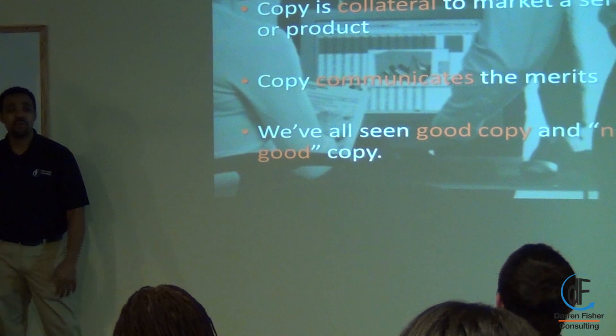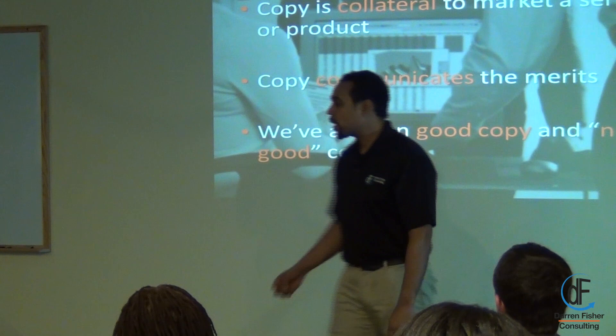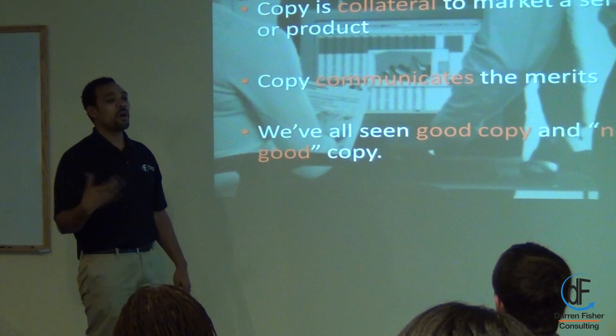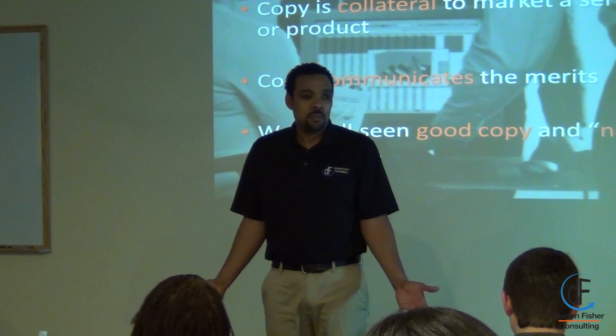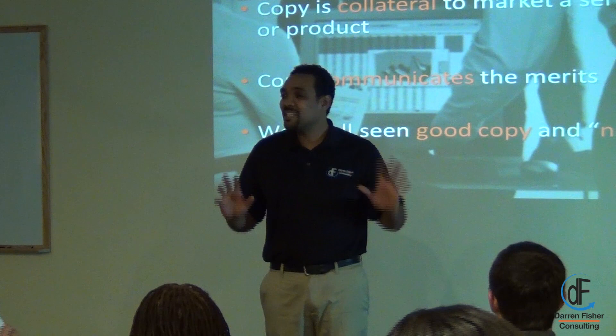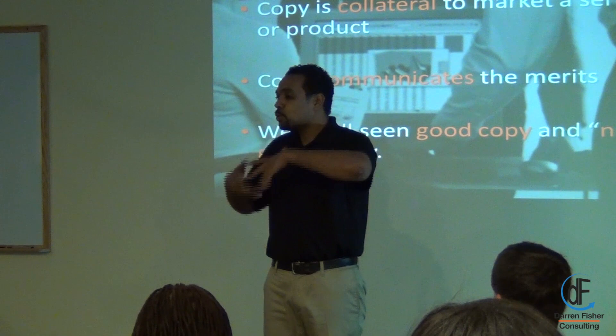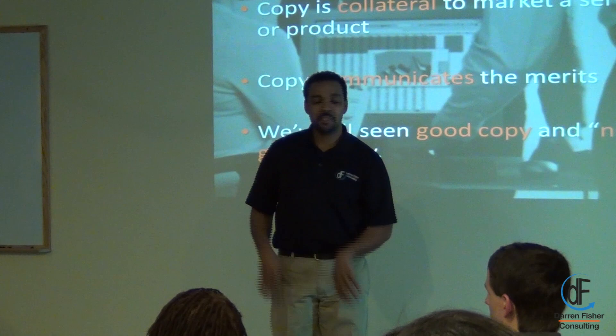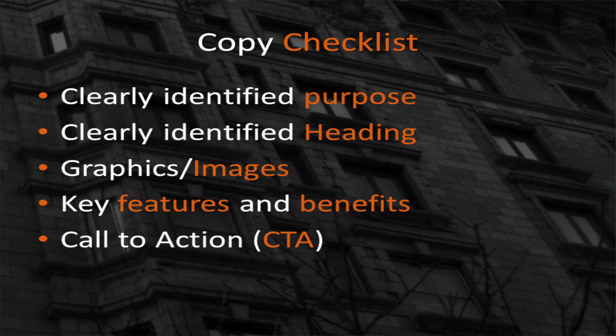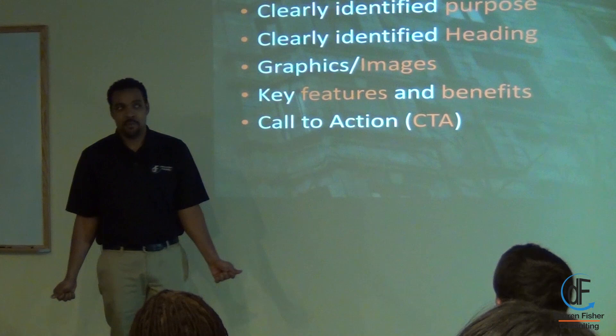Each one of us has seen good copy and not-so-good copy — stuff we generally like and don't like. We're going to look at evaluating it. We're going to go over what are the nine things you need to look at for marketing copy. A marketing person is going to give you something, you're going to take a look at it and evaluate it — 'okay, this is going to go out.' So I'm doing a mailer or a sell sheet. A sell sheet is a piece of copy used to sell something or give information about something. Number one: you need to have a clearly identified purpose for it — what are we creating this for?